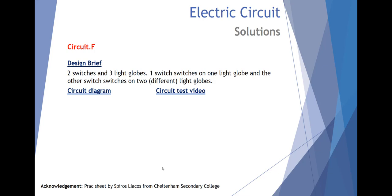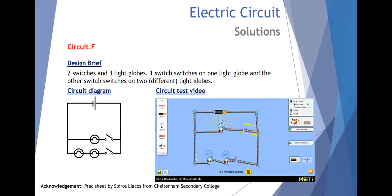Circuit F, two switches and three light globes. One switch switches on one light globe and the other switch switches on two different light globes. One switch for one and the other for two.